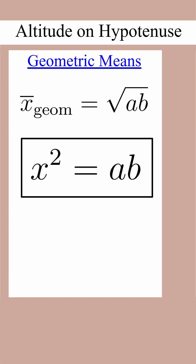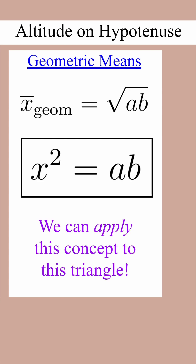The geometric mean of two numbers is given by the equation x squared equals AB. You don't need to know this for the SAT, but we can write some very handy shortcuts involving this shape, which we'll do on the next slide.